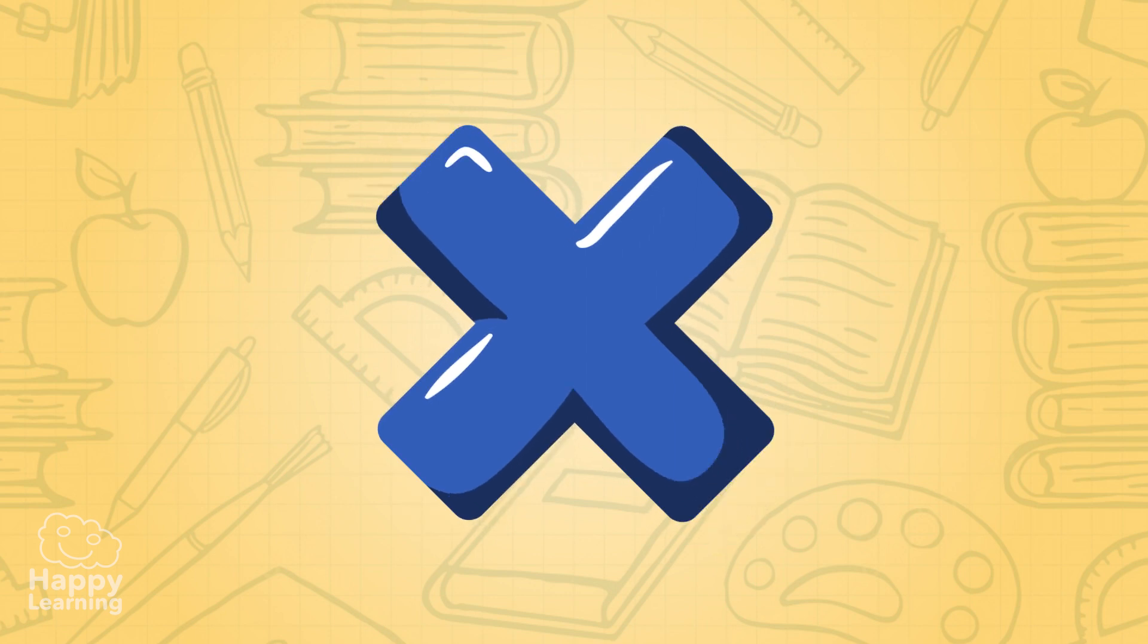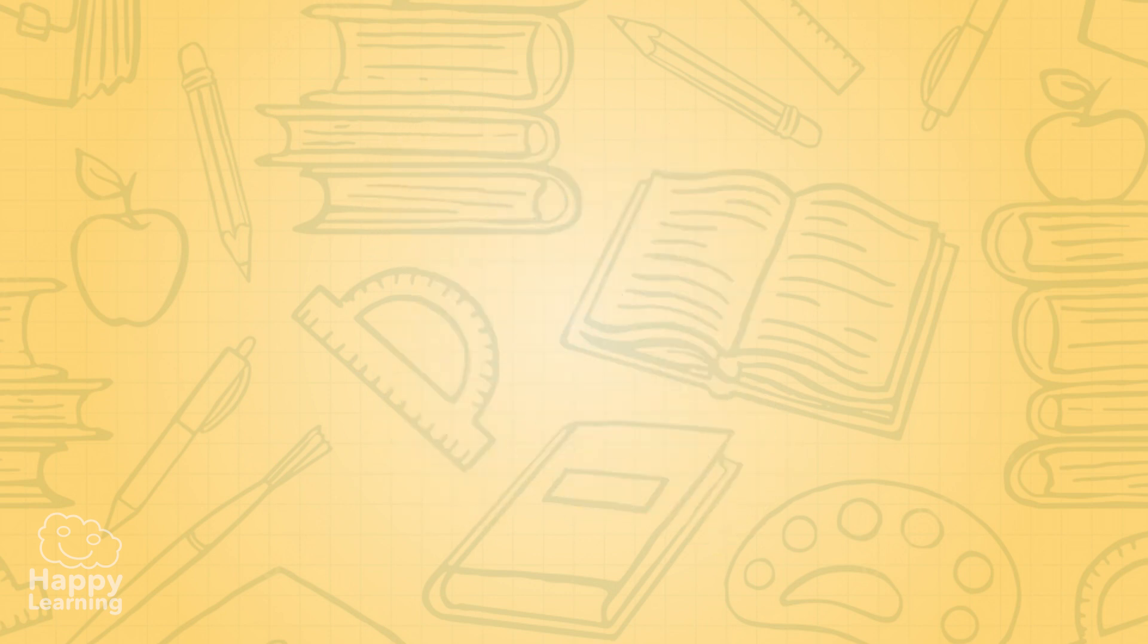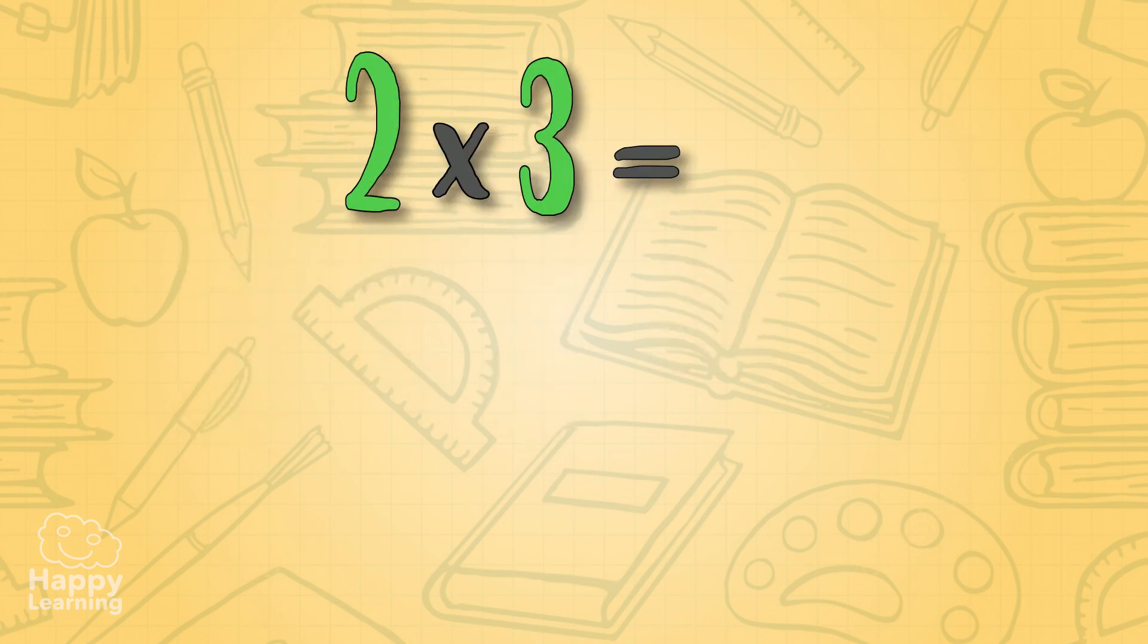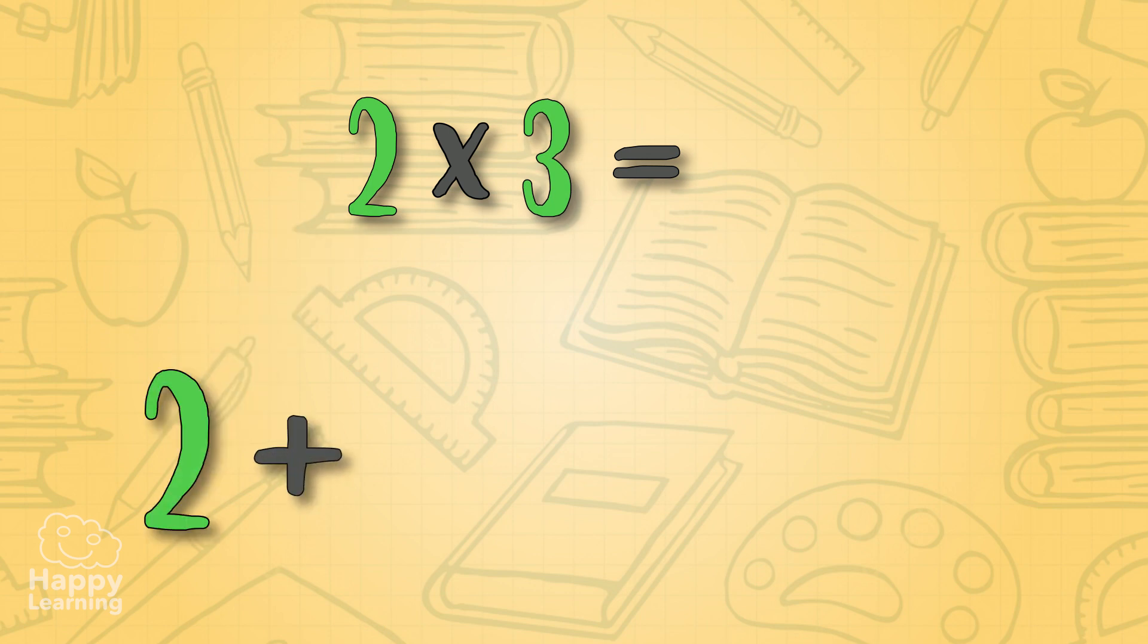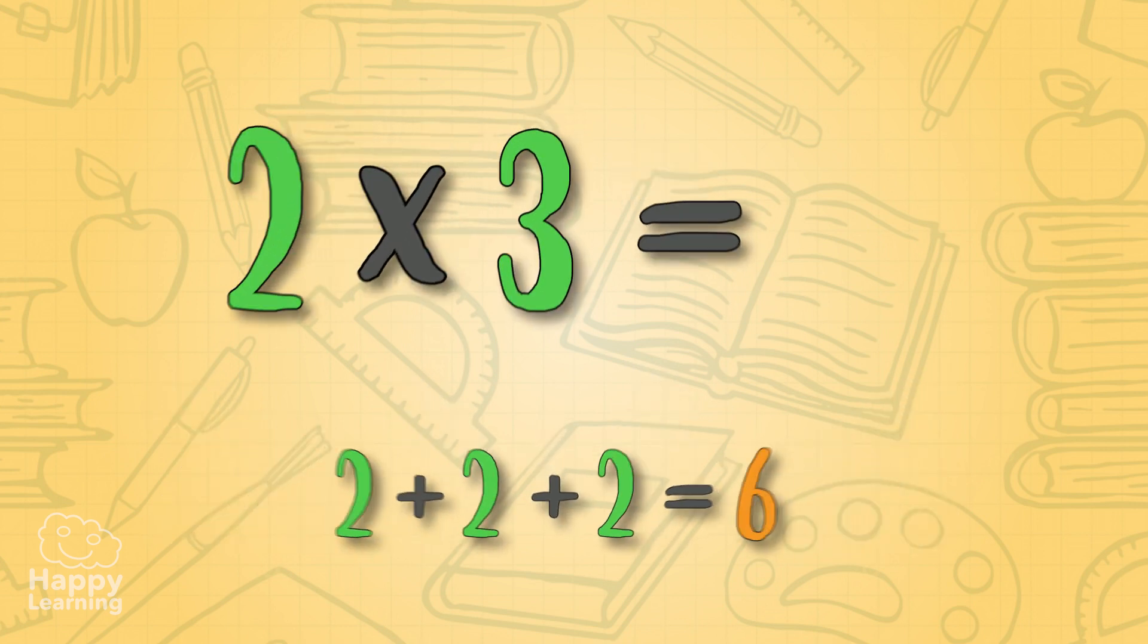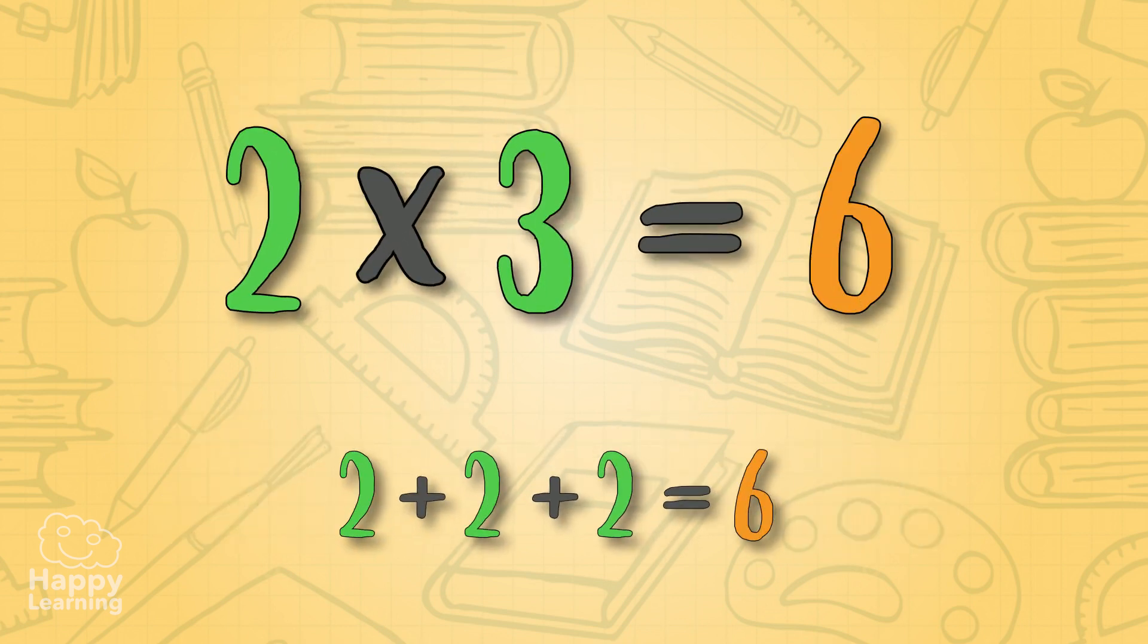If we saw this multiplication two times three, what we need to do is add number two three times, like this: two plus two plus two is equal to six. So two times three is six, easy peasy.